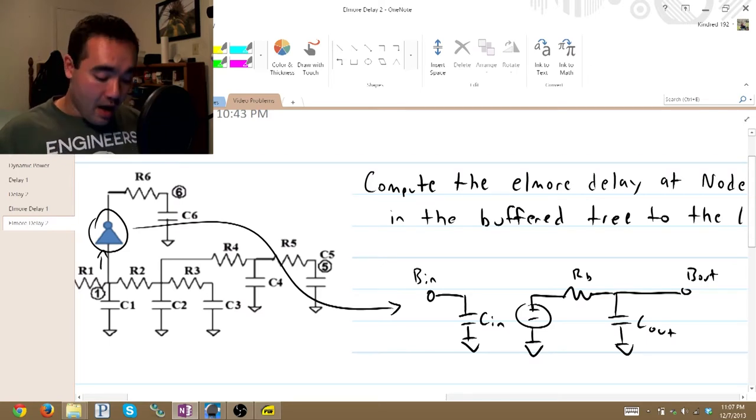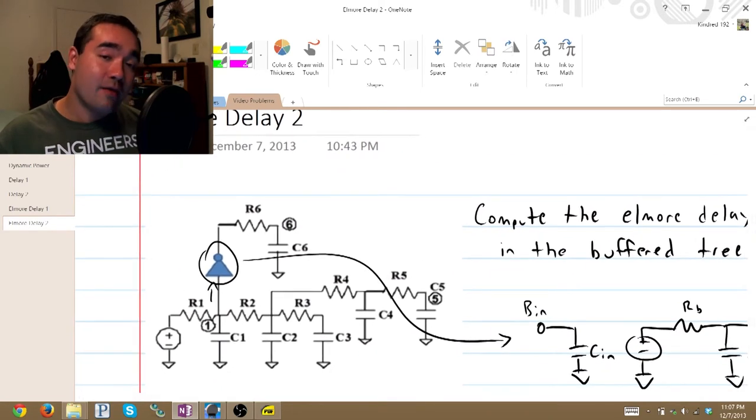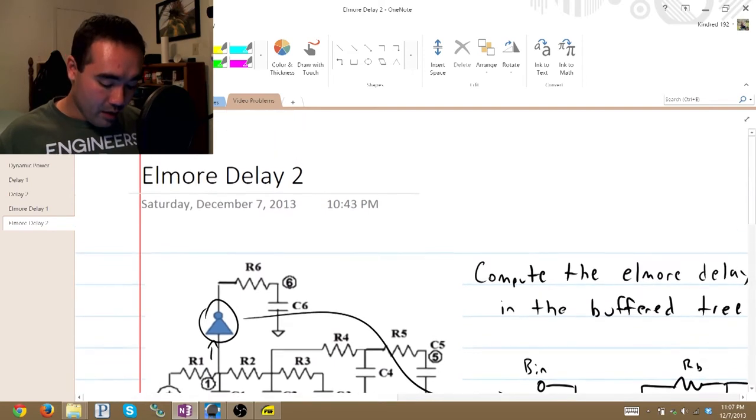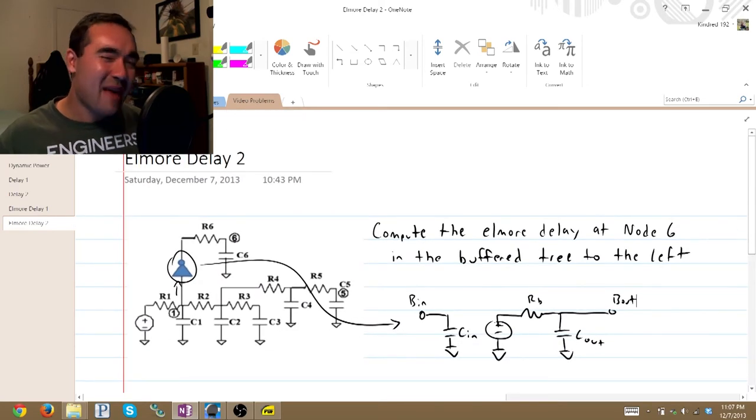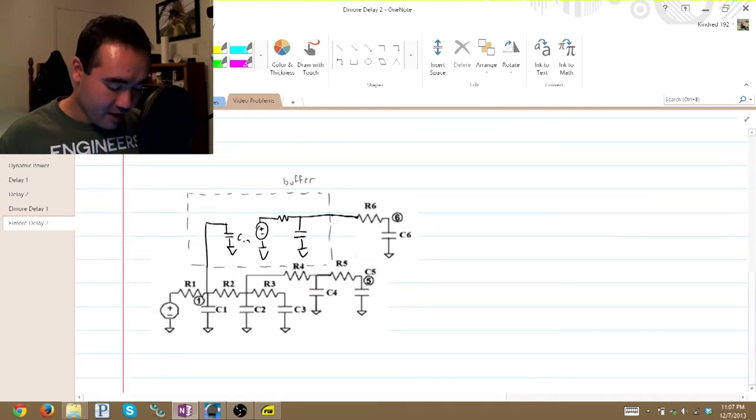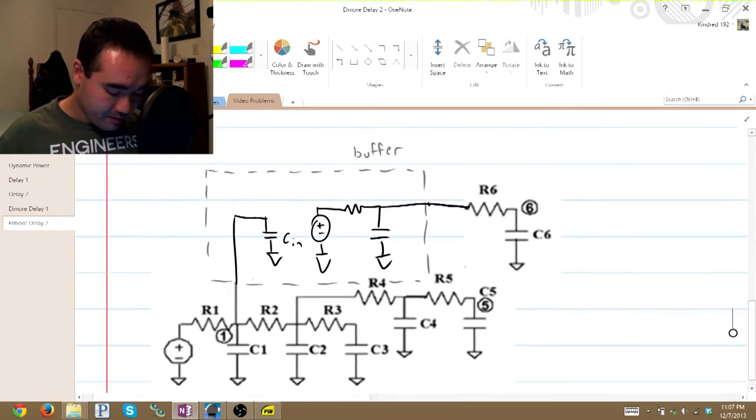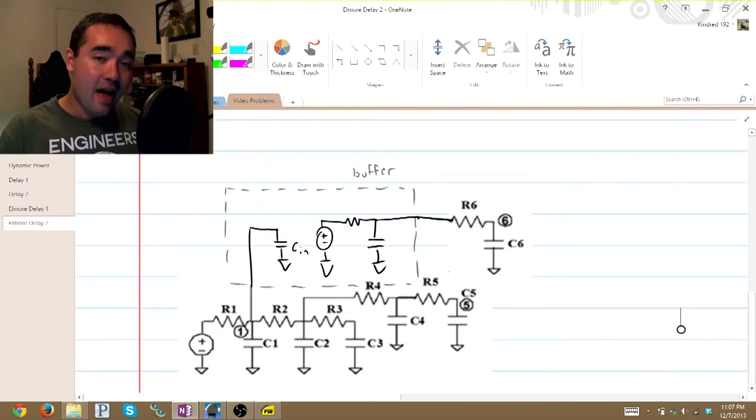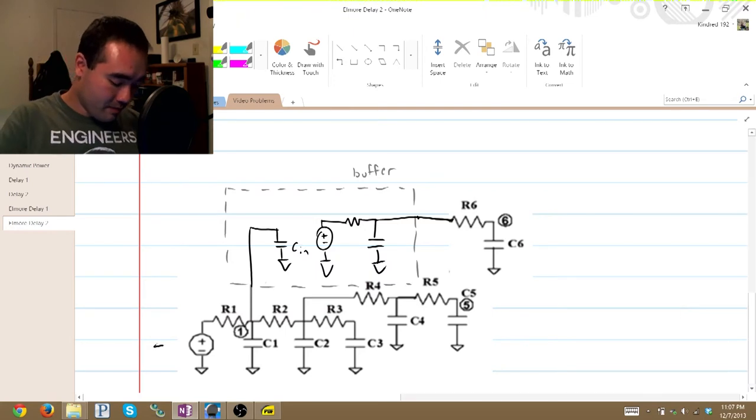Now, I went ahead and redrew a version of this circuit with our buffer schematic added in there so that we can find this Elmore delay. Okay, let's go ahead and see what that looks like. So you can see I've got a little box around our buffer, and all we have to do is find our Elmore delay from the input right here to node 6.